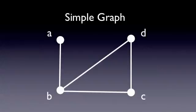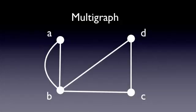So just a quick review: for a simple graph, we have a set of vertices and edges, but no parallel edges and no loops. For a multigraph, we have parallel edges, but we still don't have any loops.